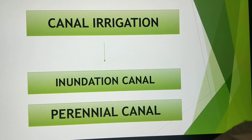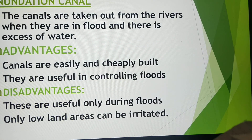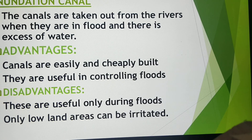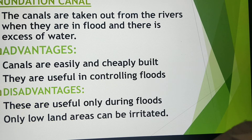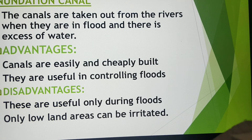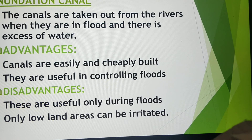Broadly speaking, canals in India are of two types: inundation canals and perennial canals. Inundation canals are taken out from rivers when they are in flood and there is excess water. They use regulating systems like barrages to regulate the flow of water. Advantages: they are easily and cheaply built and useful in controlling floods. Disadvantages: there is uncertainty of water supply, these canals are useful only during flood period, and only low-lying land areas can be irrigated.